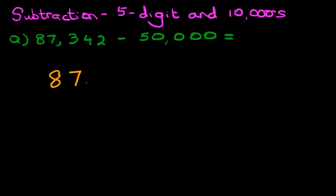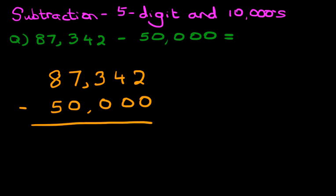Eighty-seven thousand, three hundred and forty-two minus fifty thousand. You notice in this tutorial I've added the commas in the vertical format as well. You don't have to, but again it is good practice.